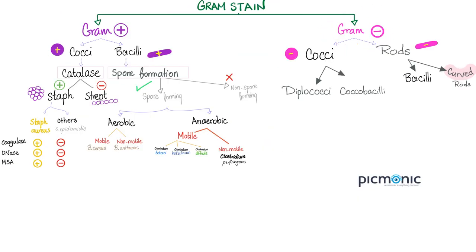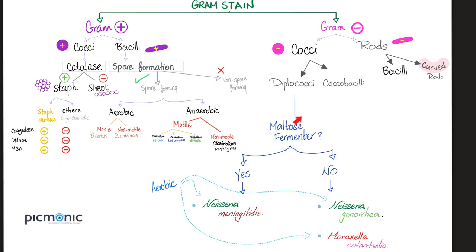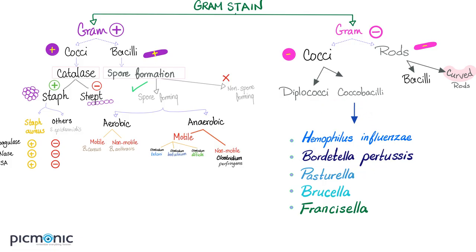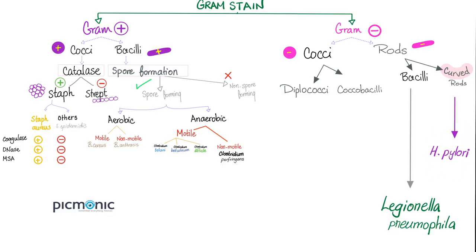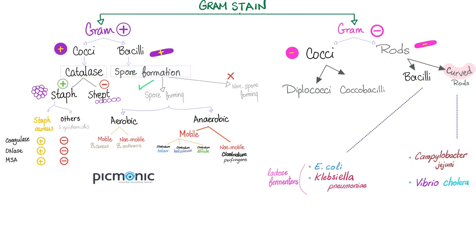As for gram-negatives — cocci or rods — cocci can be diplococci or coccobacilli. Rods can be curved or non-curved. In video six we covered Neisseria meningitidis, Neisseria gonorrhoeae, and Moraxella catarrhalis. In part seven: Haemophilus influenzae, Bordetella pertussis, Pasteurella, Brucella, and Francisella — all gram-negative coccobacilli. In the last video: Helicobacter pylori, a curved rod, and Legionella, a bacillus. Today we're still on gram-negative rods.